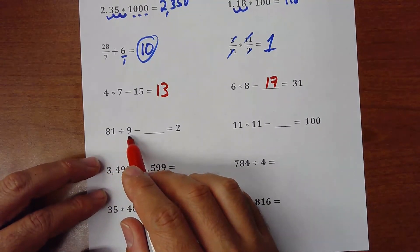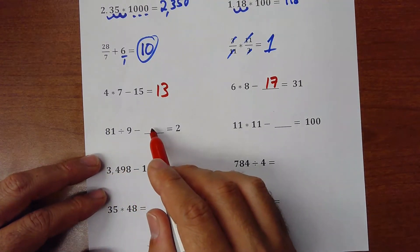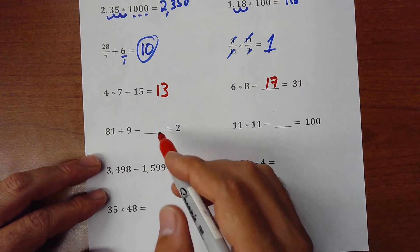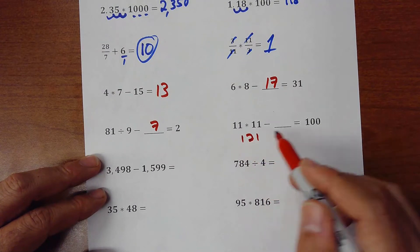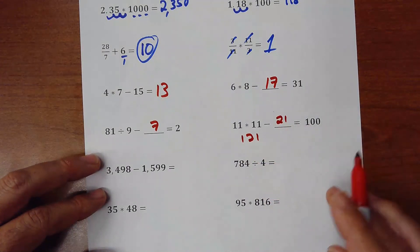81 divided by 9 is 9. Minus something. It will give you 2 as an answer. So here will be a 7. This times this, 121. Minus 21. It will be 100.